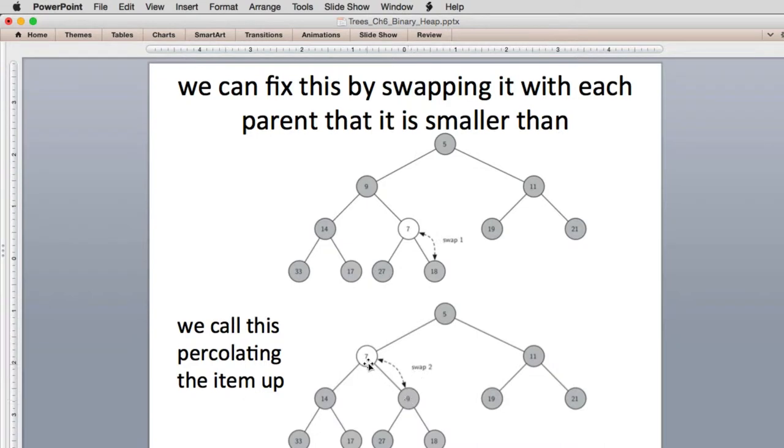So in this case, it swaps the 7 and 9. So the 7 moves up to here. And the root is smaller, so it doesn't have to swap at the root. But when we do this, when we're all done, we now have a tree that meets the heap order rule again.